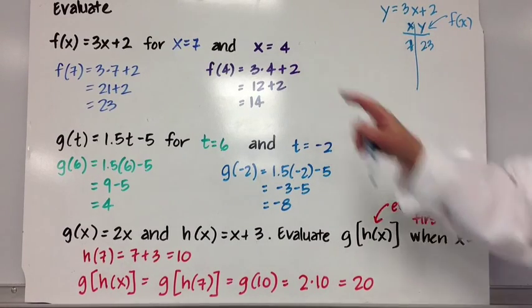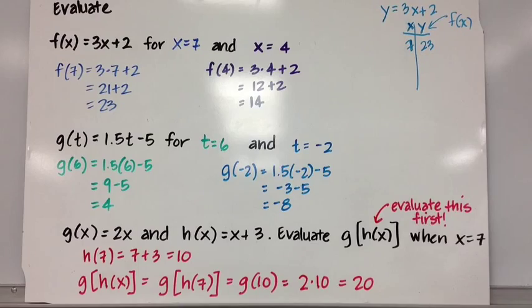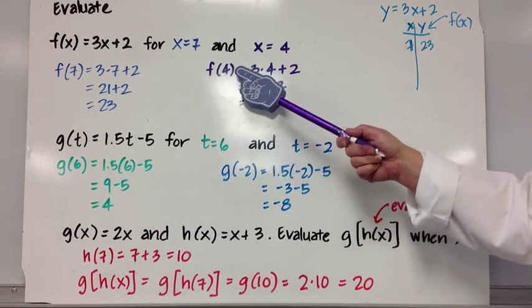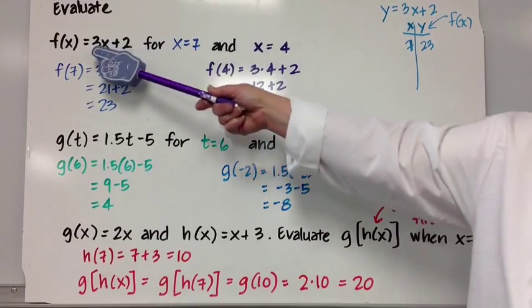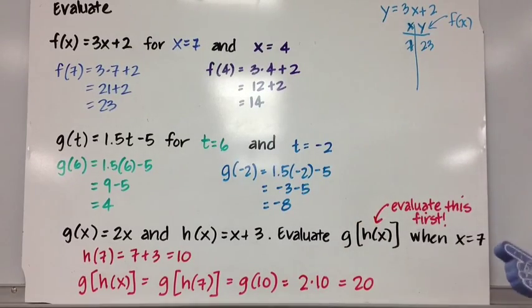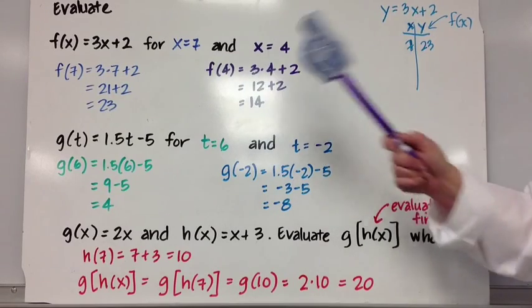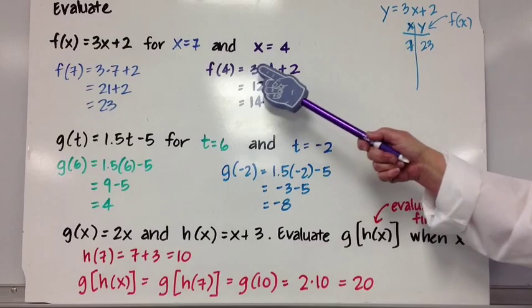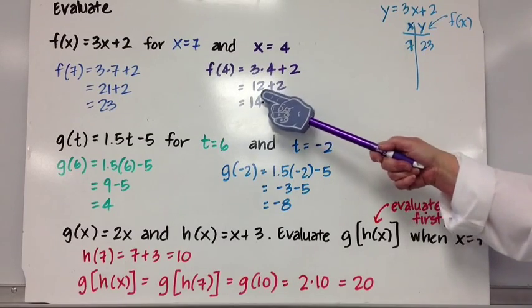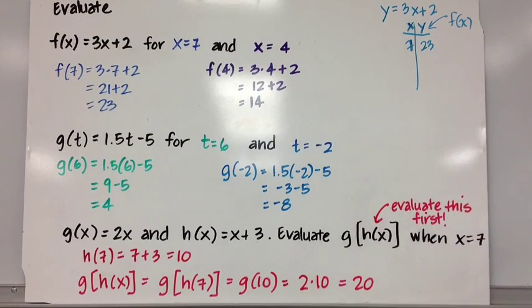When x is 4, we say f(4) = 3 times 4 plus 2. We substitute 4 for x in the equation. In fact, the function notation is telling us what we're substituting. f(4) = 3 times 4 plus 2 = 12 + 2 = 14. Again, this is just notation.